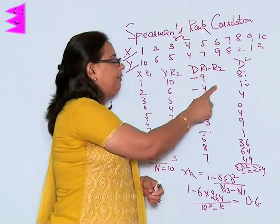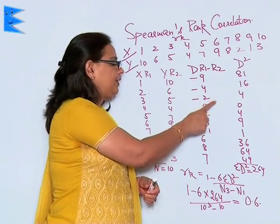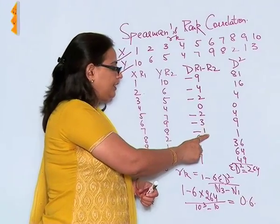So 9 into 9 is 81, 4 into 4 is 16, 2 into 2 is 4, 0 into 0 is 0, 2 into 2 is 4, 3 into 3 is 9.